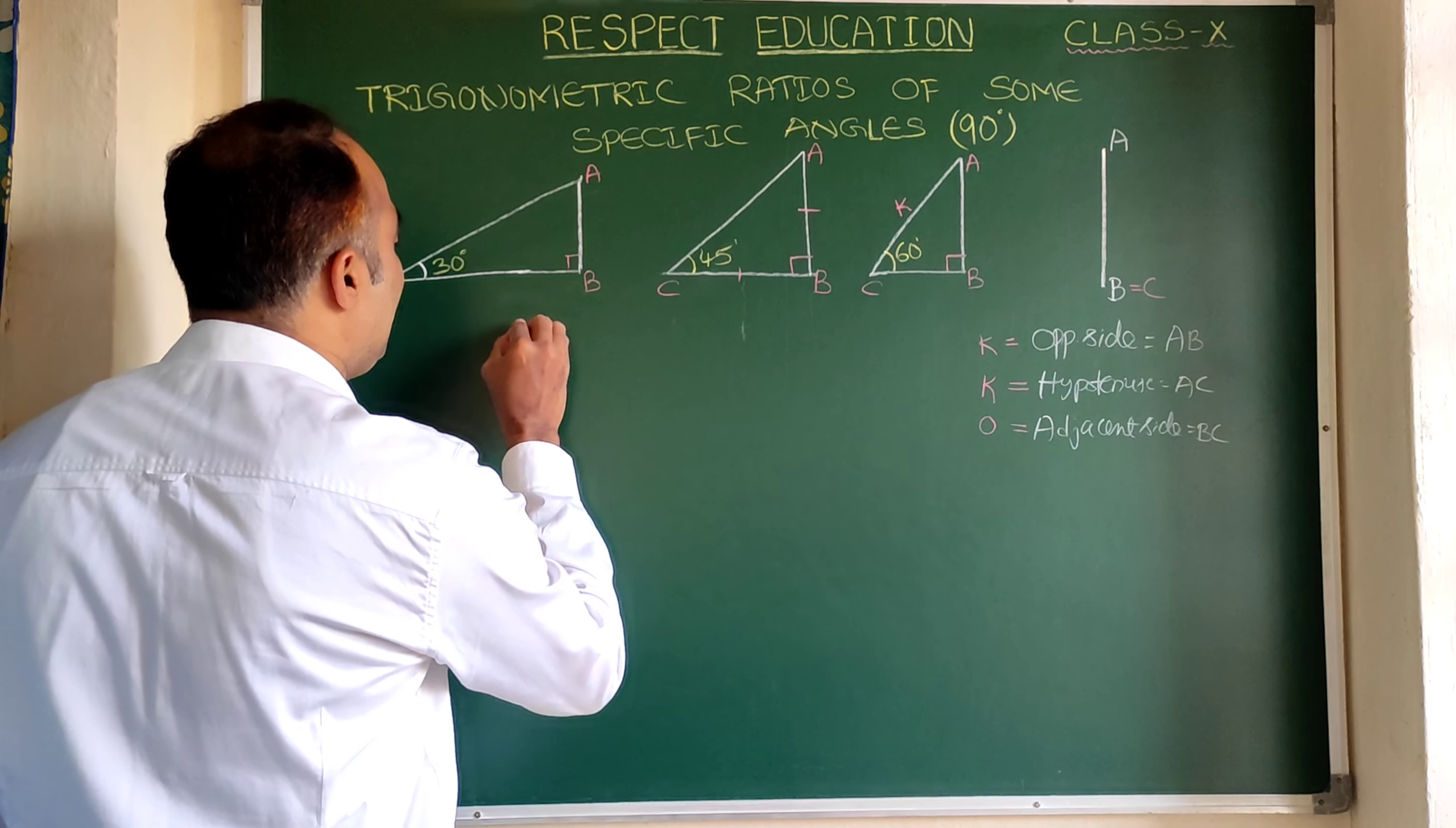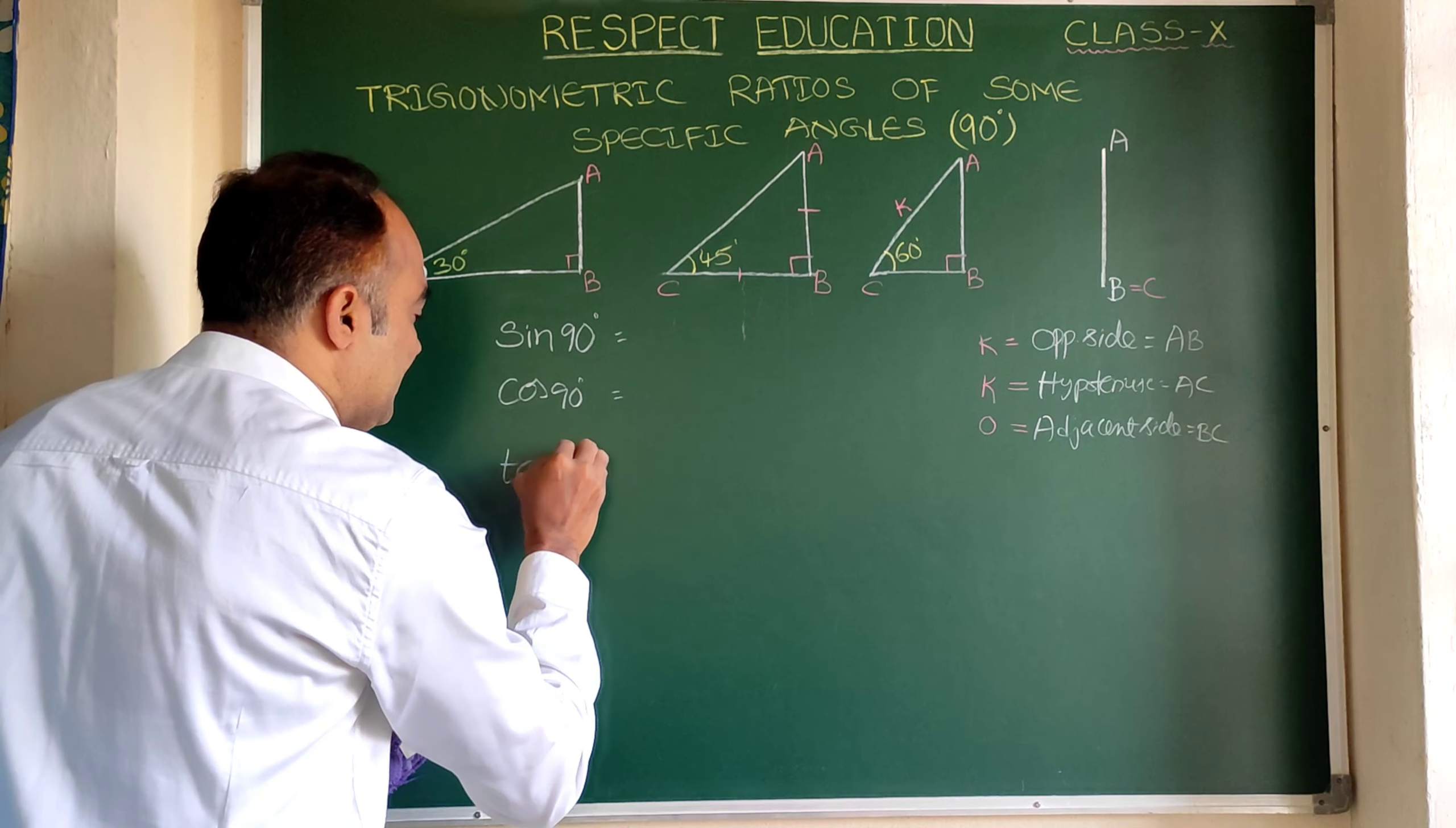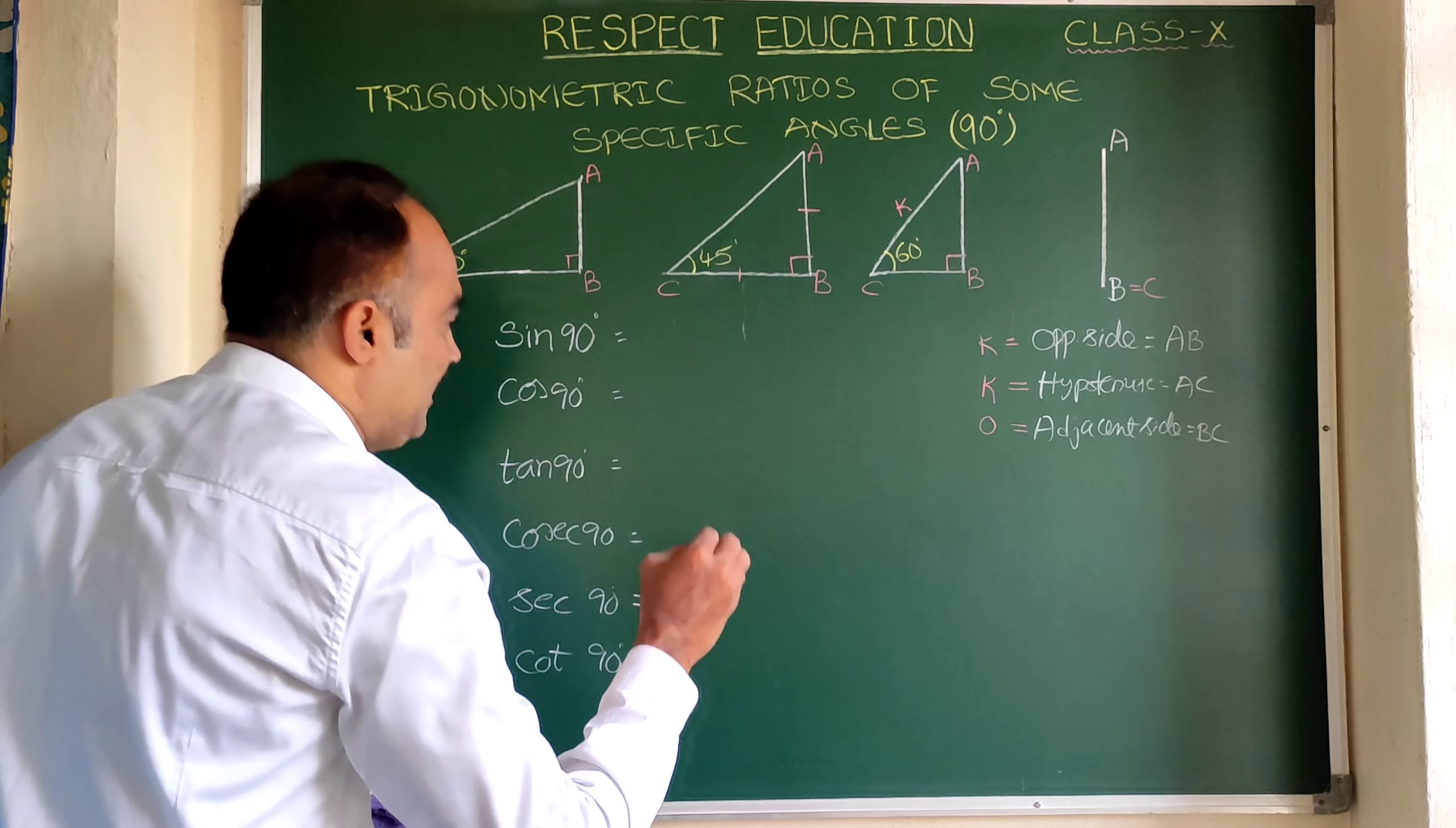Now here, let us write all the values of all the six trigonometric ratios of 90 degrees. So here: sin 90 degrees, cos 90 degrees, tan 90 degrees, cosecant 90 degrees, secant 90 degrees, cotangent 90 degrees. Right.